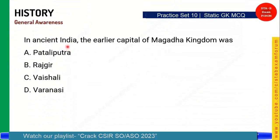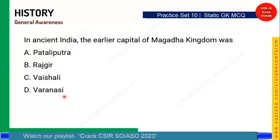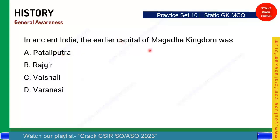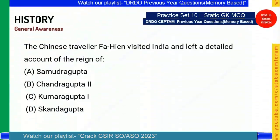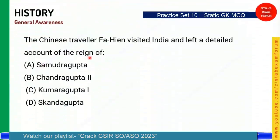Let's check your knowledge on ancient India. In ancient India, the capital of the Magadh Kingdom was which city? The second capital was Pataliputra, but what was the earlier capital? The correct answer is Option B — Rajgir. Rajgir was the earlier capital of the Magadh Kingdom before Pataliputra.